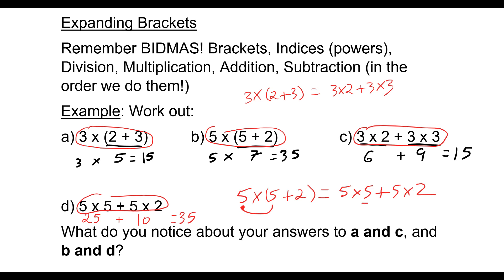By 5 on the inside to get 5 times 5. We've multiplied 5 by 2 to get 5 times 2, and then we've added. So that is basically the key to expanding brackets.